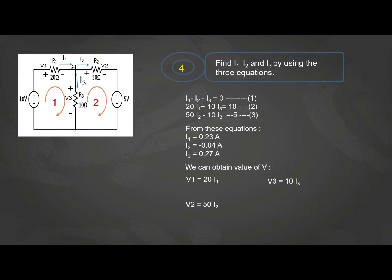So, the last step of KVL, we can find I1, I2 and I3 by using the three equations. From these equations, we can get I1 equal to 0.23A, I2 equal to negative 0.04A and I3 equal to 0.27A. We can obtain the value of V by substitute the current value into the equation below. V1 equals to 20I1. So, substitute I1, we get 4.6V. V2 equals to 50I2. Substitute the value of I2 and we get negative 2V. V3 equals to 10I3. We substitute the value of I3, we can get 2.7V.